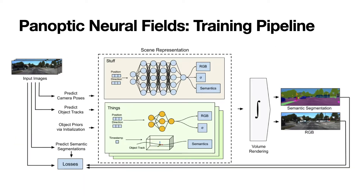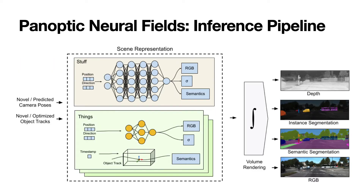Given input RGB images, we first run off-the-shelf image-based methods for obtaining camera pose, object tracks, and 2D semantic segmentation. We then jointly optimize the MLP weights for both stuff and things, and object track parameters using analysis by synthesis with self-supervision from the color images and pseudo-supervision from predicted semantic segmentations. At inference time, the learned panoptic neural field representation can be queried to render outputs for tasks like panoptic segmentation and depth prediction. The representation can also be used for scene editing and novel view synthesis by simply changing the camera poses and object tracks.